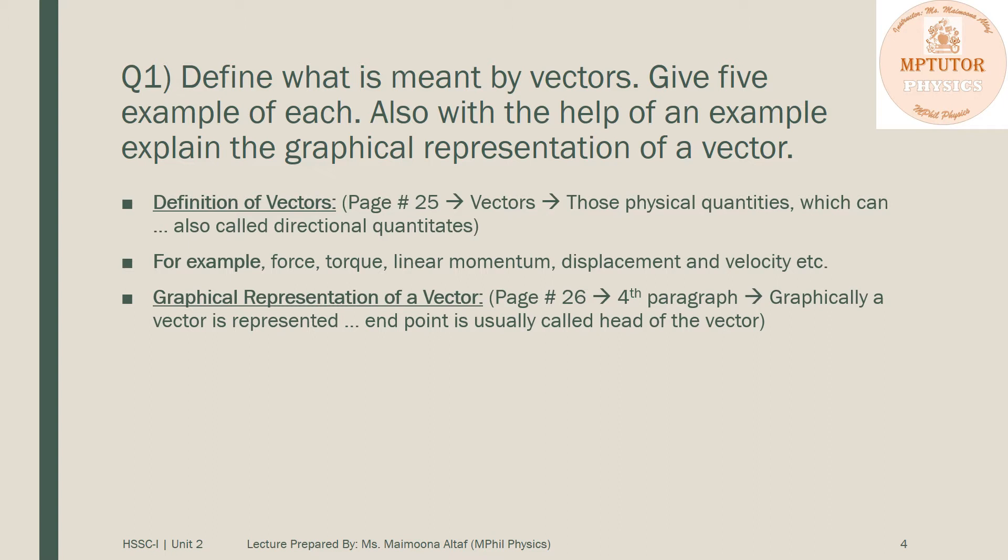So either you can make an amendment in the question at the start - define what is meant by scalars and vectors, and then write five examples of each. Or if you only define vectors as given, then the second part will be give five examples of vectors, and we won't use 'each'.